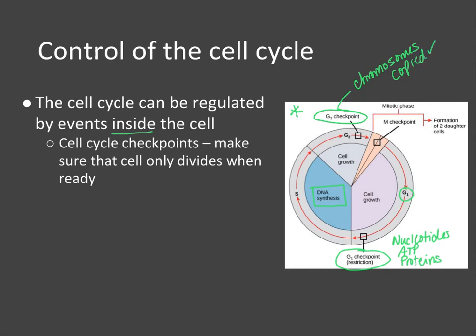The G2 checkpoint also checks whether the cell is big enough to eventually split in half, whether there is enough ATP for the energy required for mitosis, and whether there are enough proteins for making new structures, the mitotic spindle, and enzymes needed for mitosis to occur.